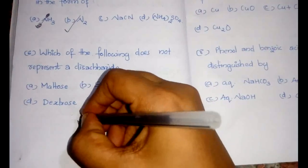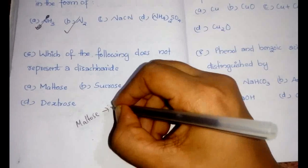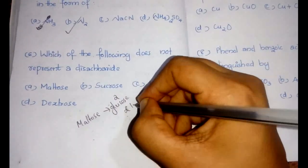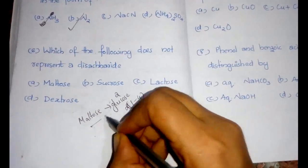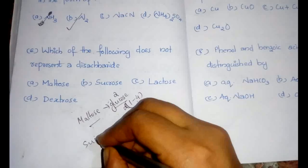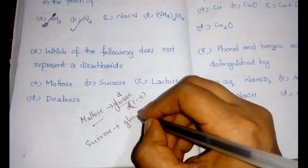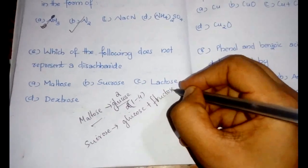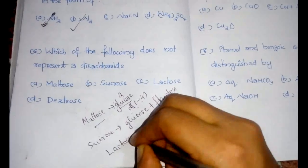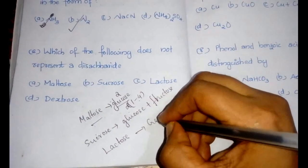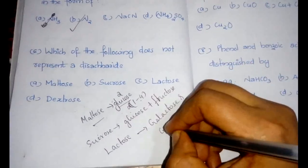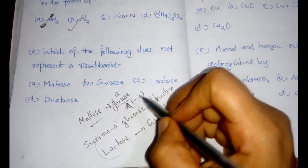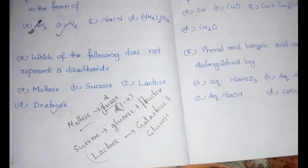In that case, maltose is formed by two glucose molecules, lactose by glucose and galactose, and sucrose by glucose and fructose. All these three are formed by two monosaccharides combination. So definitely our answer should be dextrose.